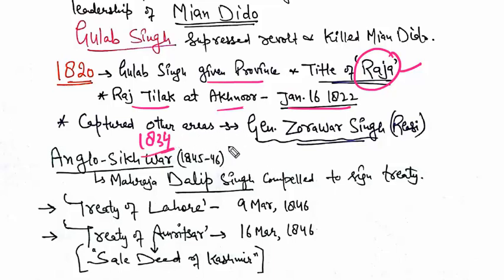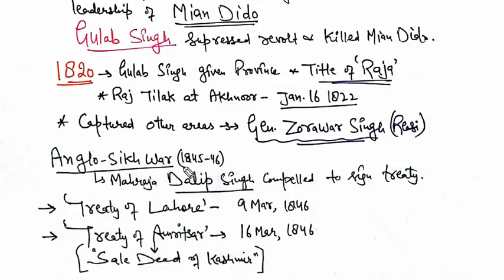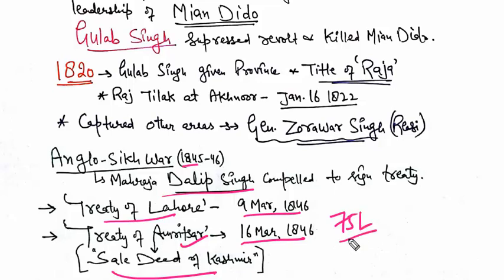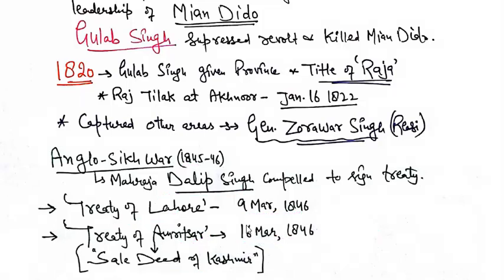The chief architect of all these victories was General Zorawar Singh of Riyasi, who was the military commander. After the first Anglo-Sikh War in 1845-46, the Treaty of Amritsar was signed. Under this treaty, Kashmir was sold to Gulab Singh for 75 lakhs, paid to the British, and the state of Jammu and Kashmir was founded on 16 March 1846.